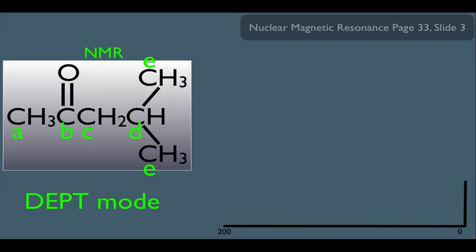Here's the first one. The first one is just like the proton-decoupled mode, which means we get a single peak for all the different types of carbons within the molecule.